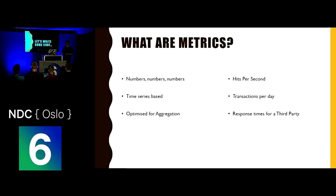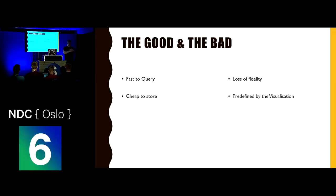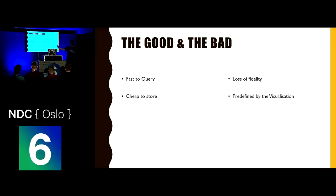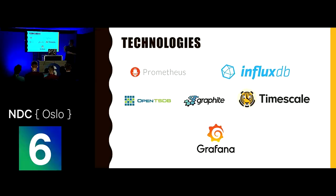Obvious metrics you'd have: hits per second, transactions per day, request times to your payment service provider or third party. They have good and bad points. They're very fast to query because they're numbers and aggregated — you can query vast amounts of data for very little resource. They're very cheap to store. However, you lose fidelity — you can't say for that specific request on Tuesday at 6:01pm what happened. You lose the ability to drill into individual requests. They're also predefined by the visualizations you want to do — you've got to think upfront about how you're going to display this, because you can't go back and add metrics unless you build a time machine.